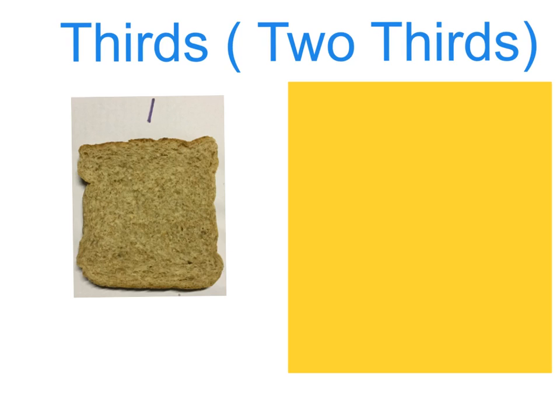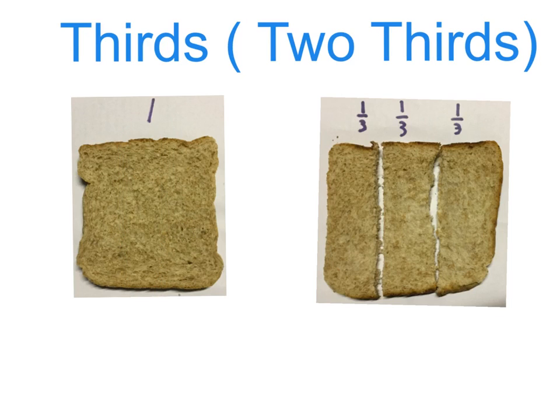So we take a slice of bread and we cut it into three equal parts almost like this, and then each of these parts will be called a third, a third and a third. So I say again, I took the slice of bread and cut it into three equal parts. Here's my three parts.